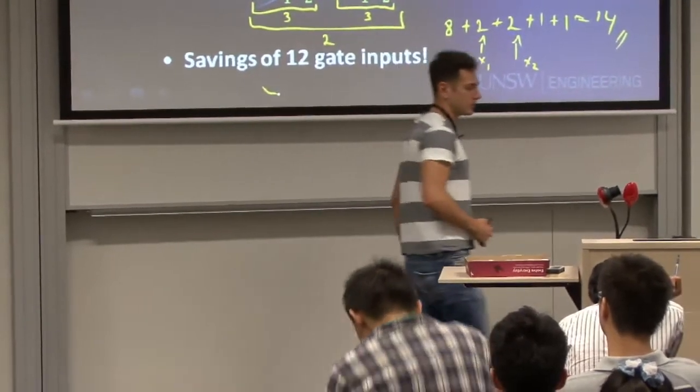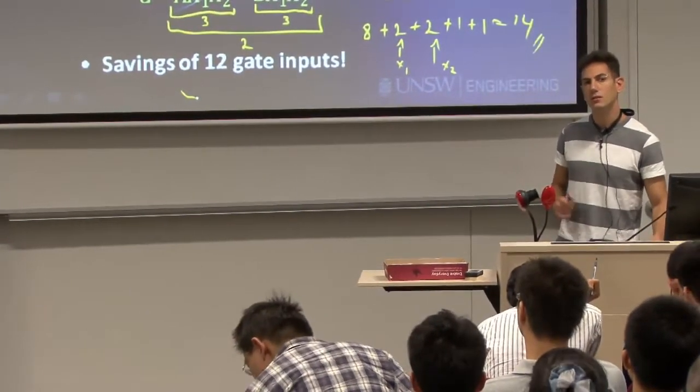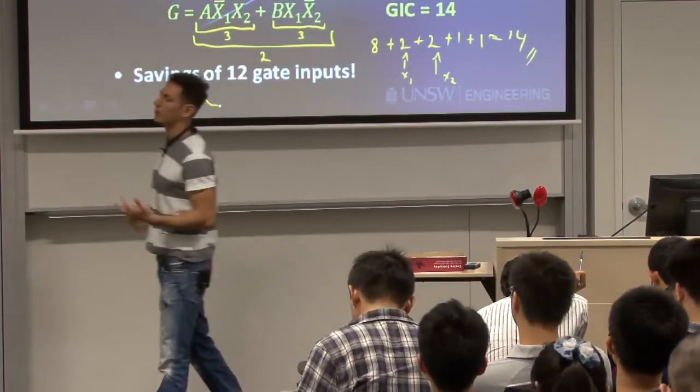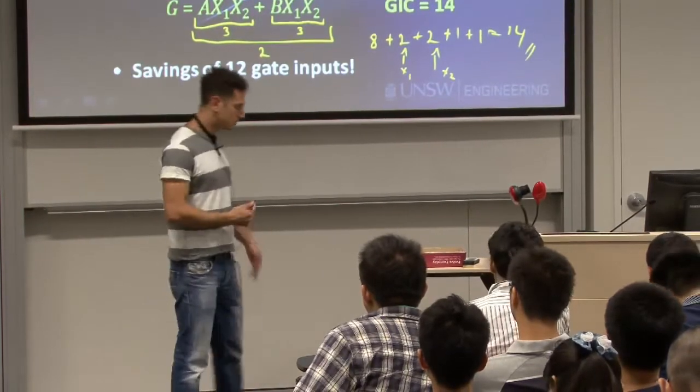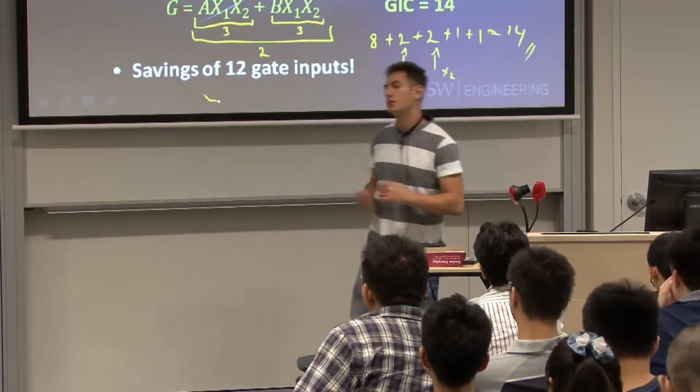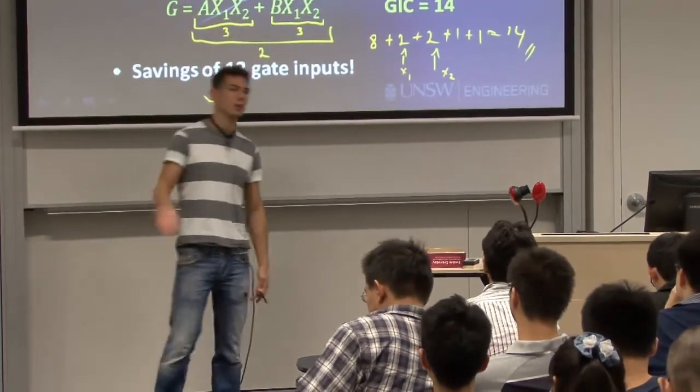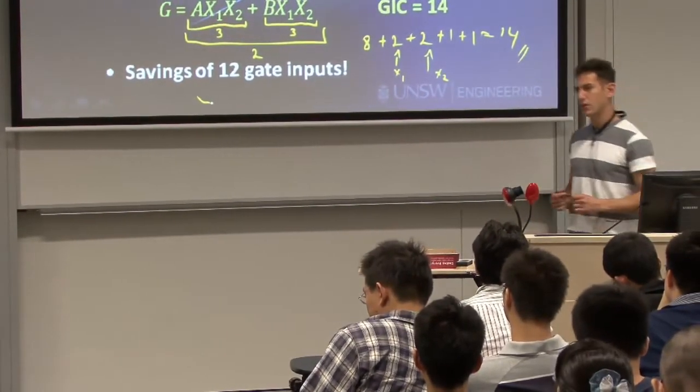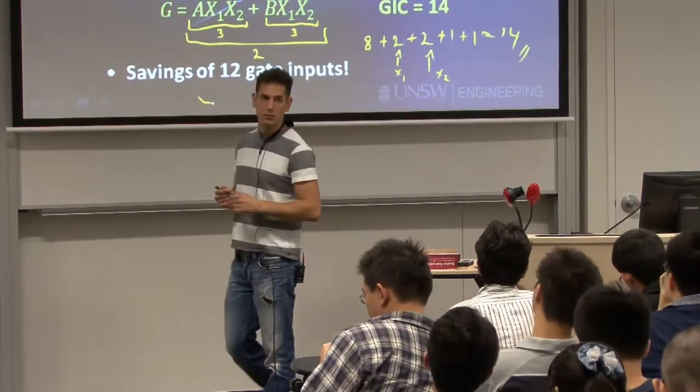Then we talked about multi-level optimization. We said we have some trade-off between how many levels. The more levels you have, the more propagation delay you introduce in the circuit. In a way it will be slower but it might take less space on the chip and less power. We introduced a couple of methods of how you go about converting from a two-level design into a multi-level design.